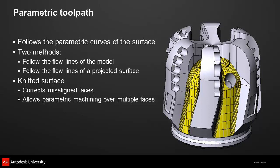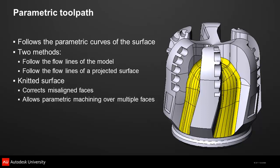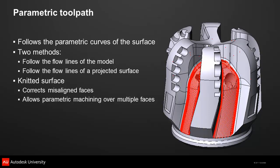That's where the knitted surface function comes in. The knitted surface overcomes the problem of misaligned faces by creating a single, continuous surface on the solid model. The knitted surface can then be used to drive a parametric machining pattern on the underlying model, so smooth and continuous toolpath can be generated without changing the original part model.